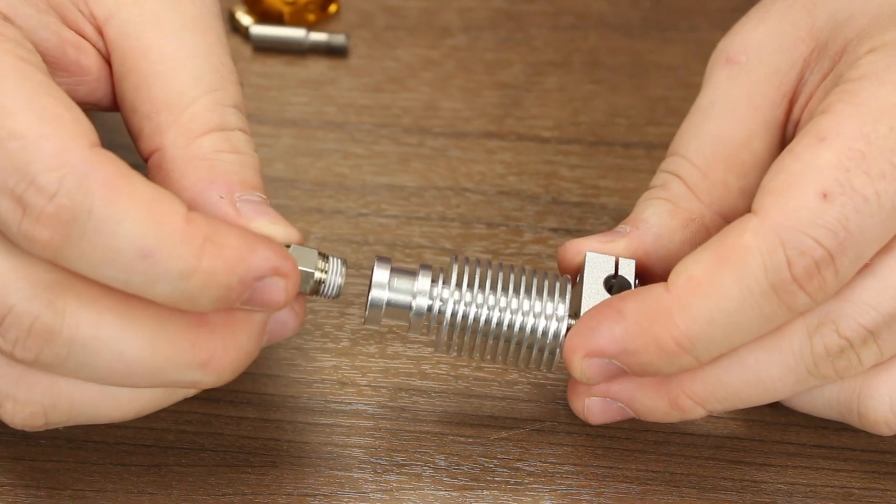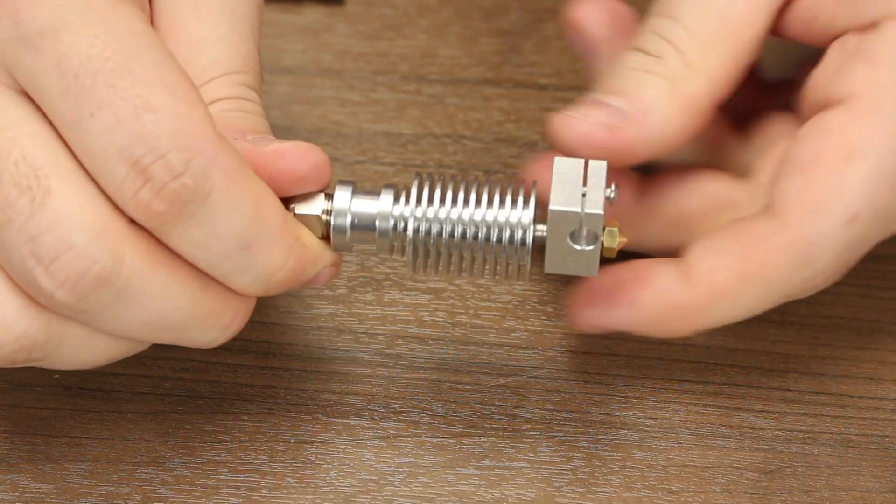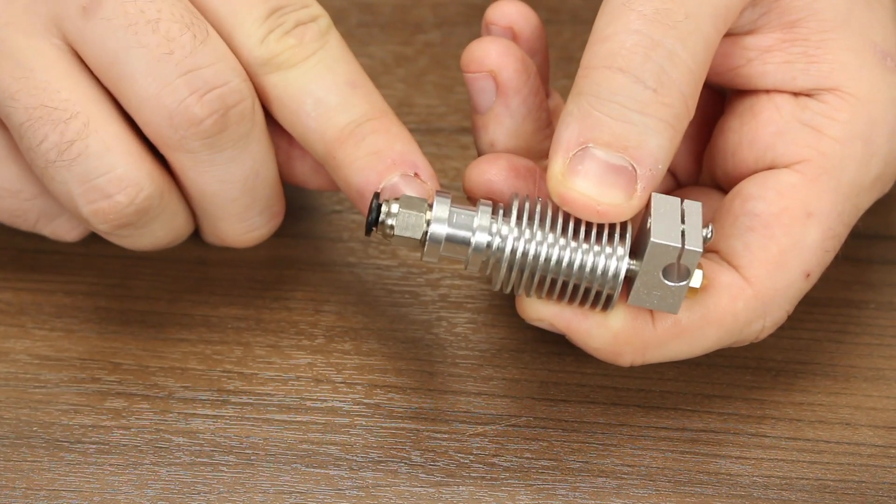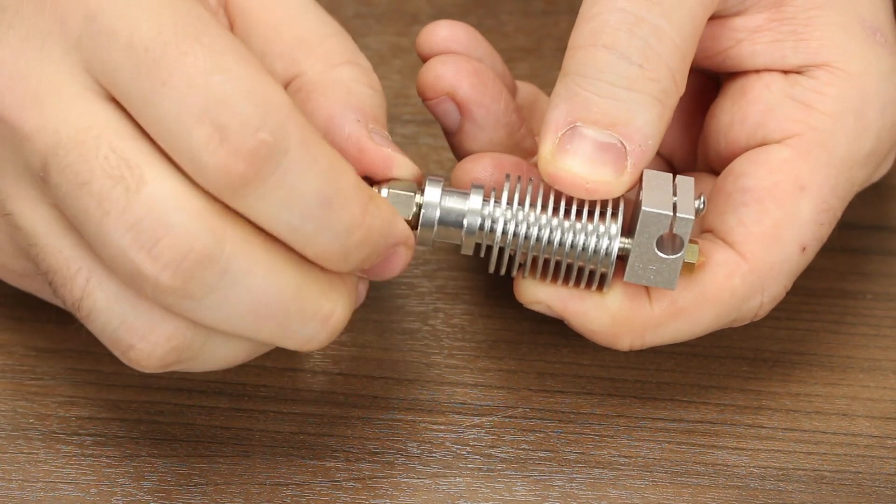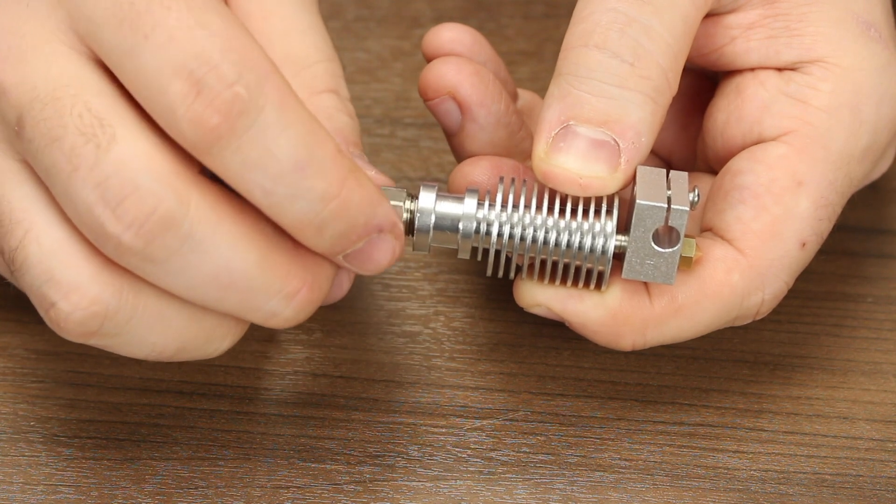Next we're going to screw our pneumatic fitting on the top of the heat sink. Just like with our nozzle, it is possible to screw the pneumatic fitting on until it physically stops. If we keep it here, we can't tighten the PTFE against the top of the nozzle though. So what we want to do is take the pneumatic fitting and unscrew it about halfway.